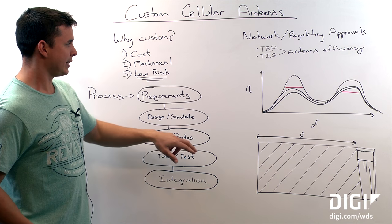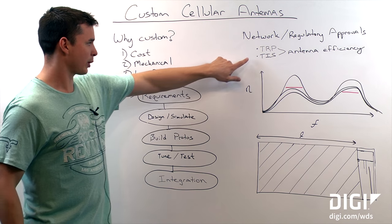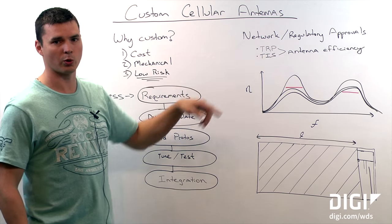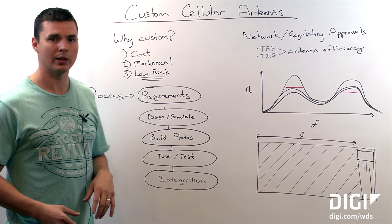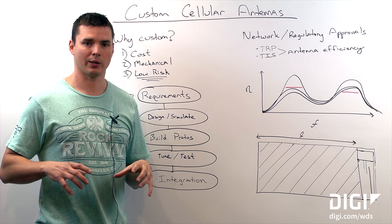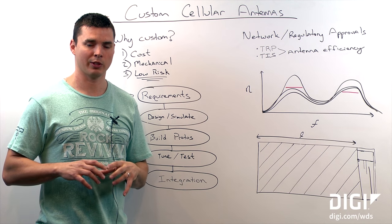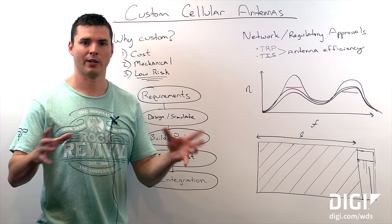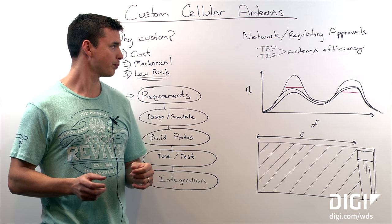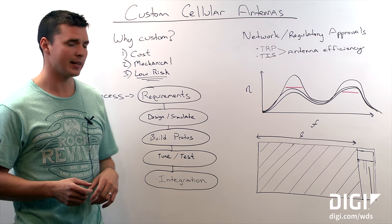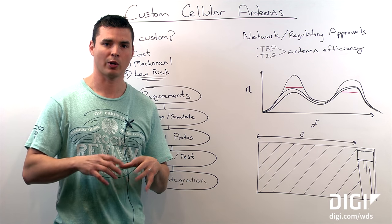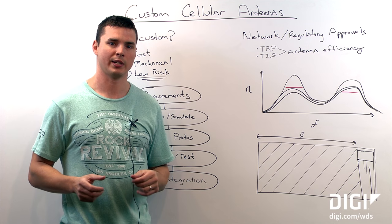Some key tests from those network approvals are TRP and TIS. TRP is total radiated power, which is a measurement of power delivered from the antenna across all angles and integrated. TIS is a measure of sensitivity over all angles from the antenna and integrated.